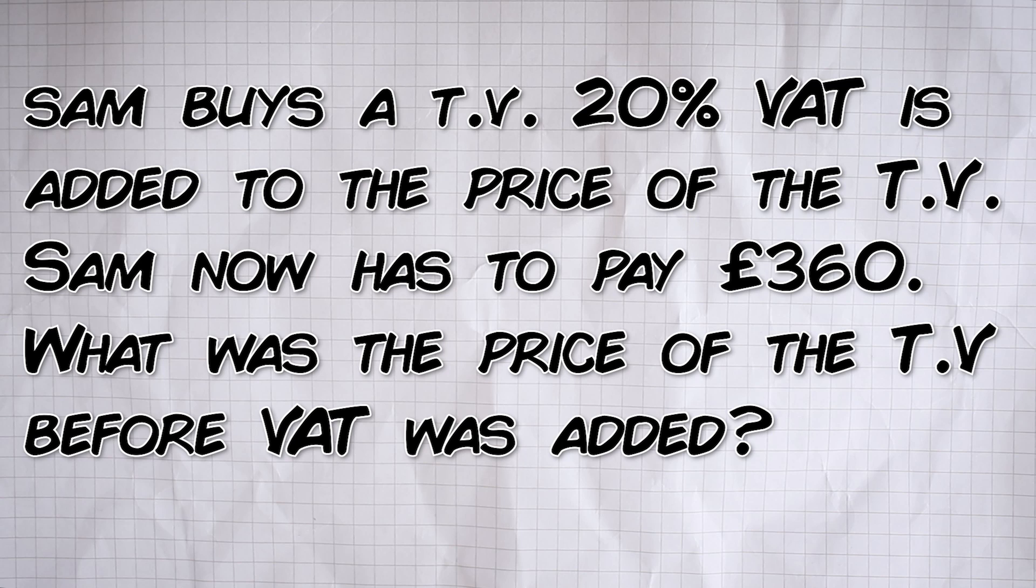Okay, the final example then looks at reverse percentages. Sam buys a TV. 20% VAT is added to the price of the TV and Sam now has to pay £360. What was the price of the TV before VAT was added? Now, people often think you can just find 20% of 360 and subtract that but no, that will actually give you an incorrect answer. Here's how to do it correctly.